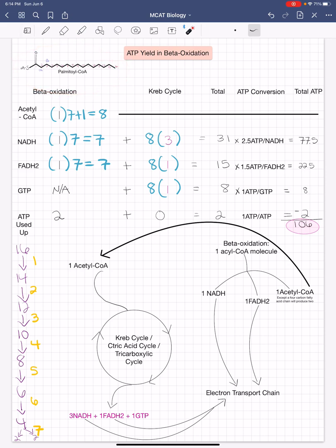In beta oxidation, each cycle will produce one molecule of acetyl CoA, except for the last cycle which will produce two molecules, one FADH2 molecule and one NADH molecule.